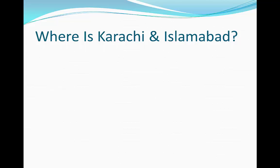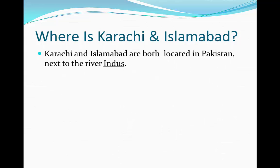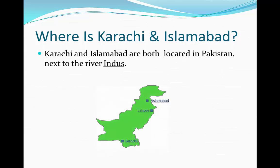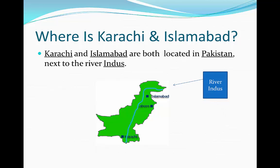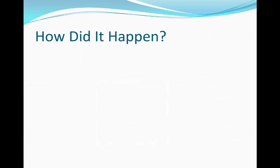Where is Karachi and Islamabad? Karachi and Islamabad are both located in Pakistan, next to the river Indus, and they were affected by the flood. As you can see, Karachi is located in the south, and that was the area that was affected mostly by the flood. The river Indus is the river which then flooded and really affected Karachi.